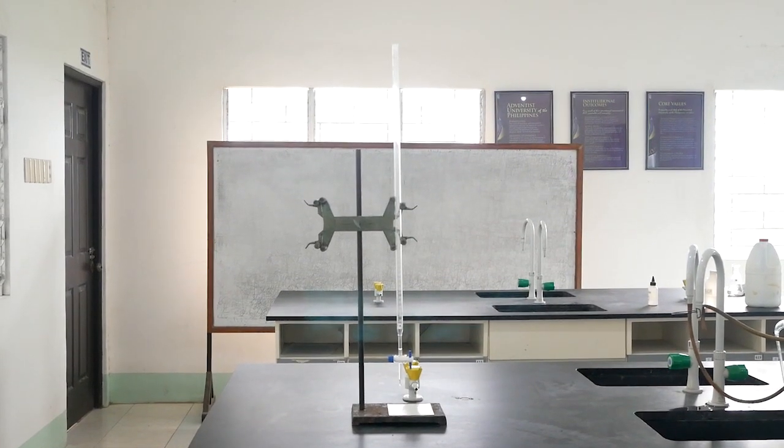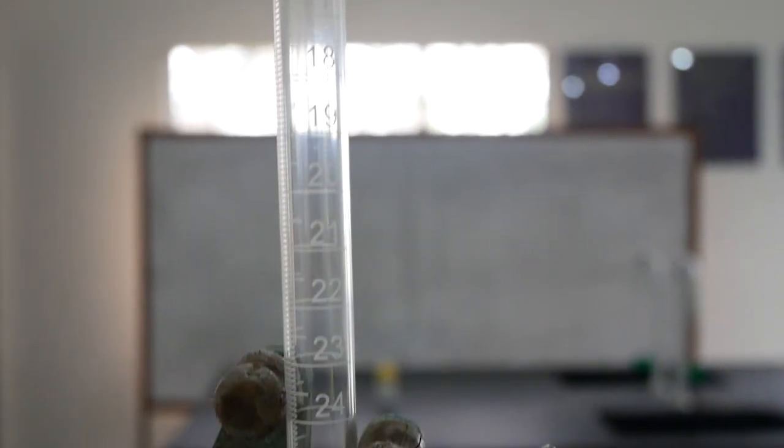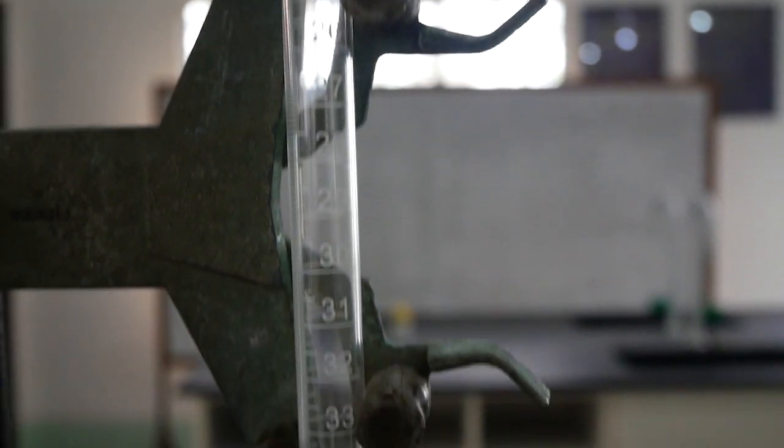So here again is the setup. Notice how the milliliter graduations on the burette start from zero at the top and increase as we go downwards to the bottom.